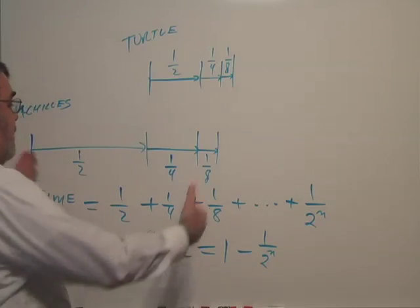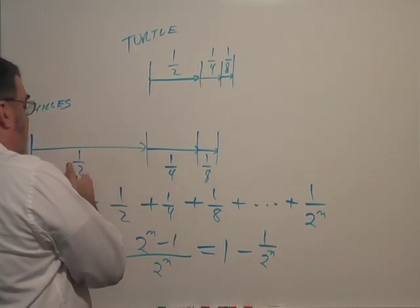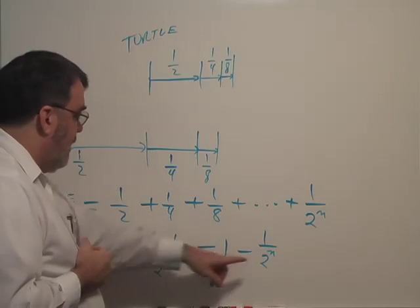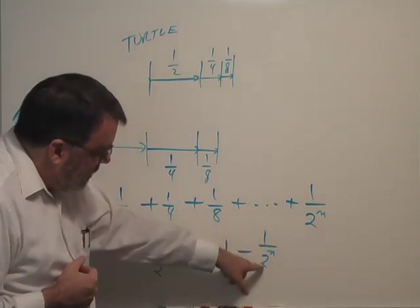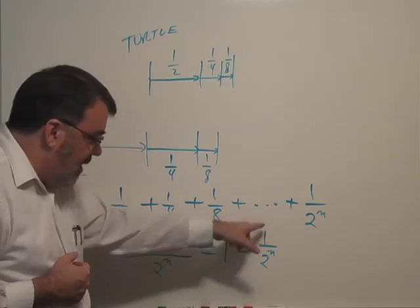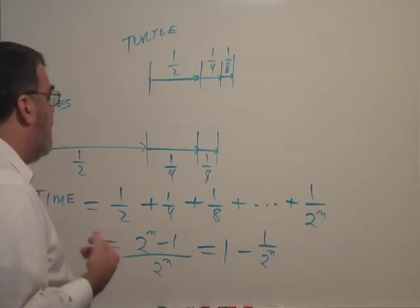Okay, so this is the amount of time. For example, after three stages, one half plus one fourth plus one eighth is seven eighths. Plug three in here, it's one minus one over two to the third power, one minus one eighth is seven eighths. That's how that works.